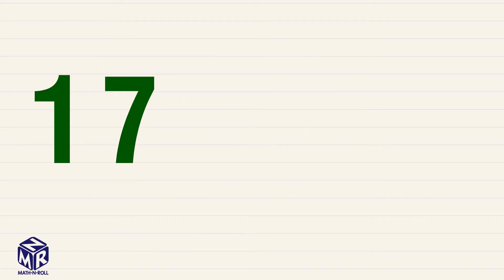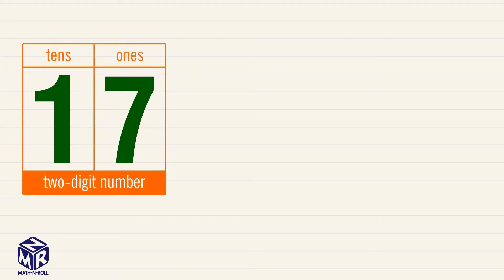Let's take a look at 17. 17 is a two-digit number. The 1 in 17 means 1 ten. The 7 in 17 means 7 ones.